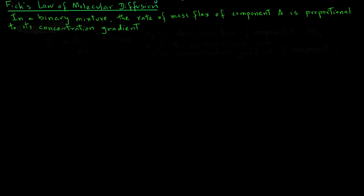This is what was observed by Fick and then expressed as M_dot_A divided by A, which represents the flux of component A, being proportional to the concentration gradient DCA divided by DX.